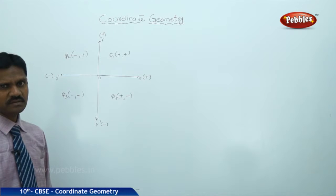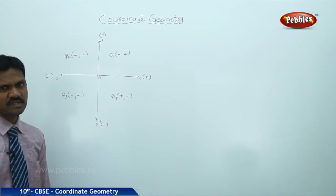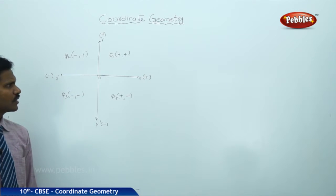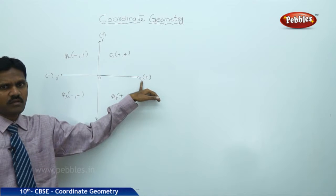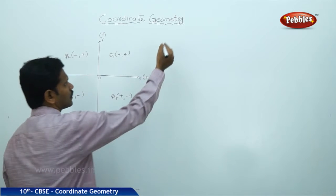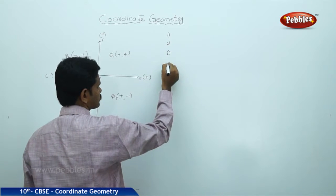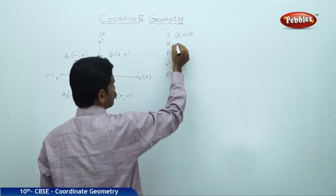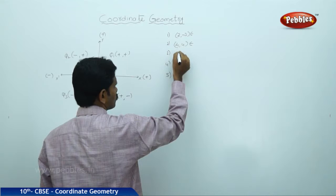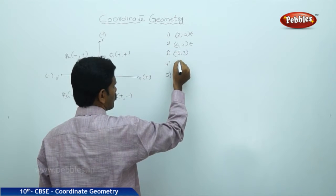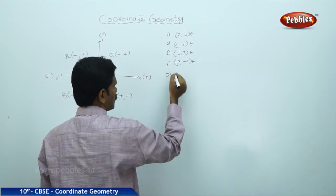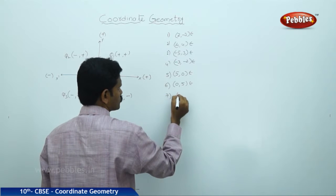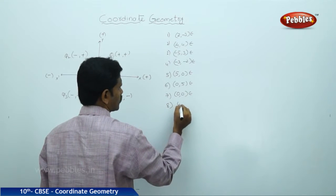Now, let us go with some examples. Before that, we need to learn an important concept: a point on the x-axis has y equal to 0. Now, consider these points to classify: (2, 3), (4, 4), (−5, 3), (−3, −2), (5, 0), (0, 5), (0, 0), and (4, −1).